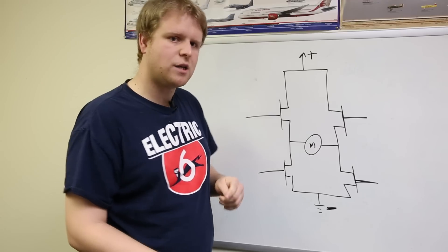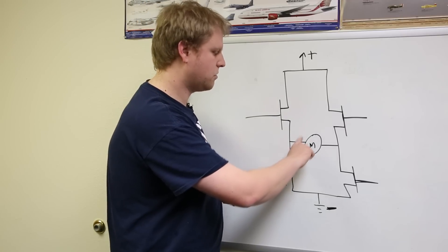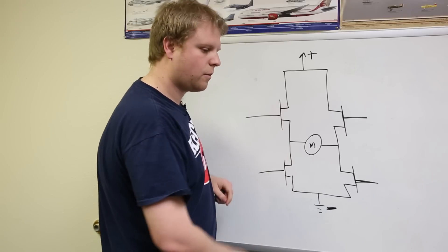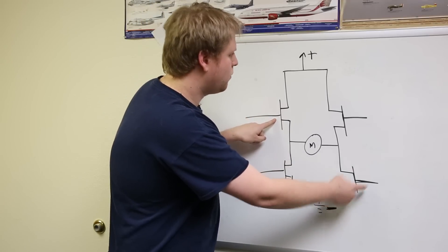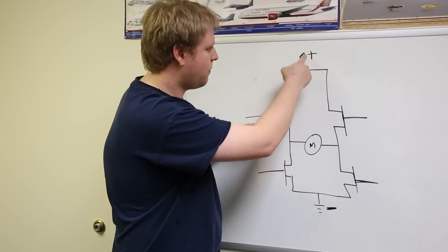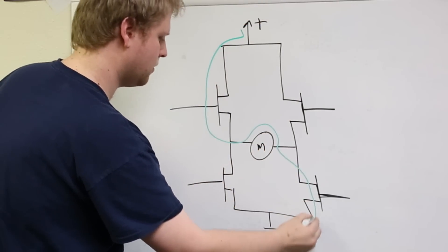So how we would do that in an H-bridge is, let's say we want the motor to turn clockwise. To turn clockwise, we'll turn this MOSFET on and this MOSFET on, which allows the current path from positive to come through this MOSFET, down through the motor, through this MOSFET, and down to ground.